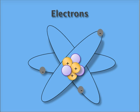Electrons move in orbits around the nucleus of the atom and carry a negative charge. The number of electrons is equal to the number of protons.